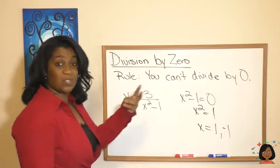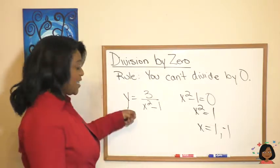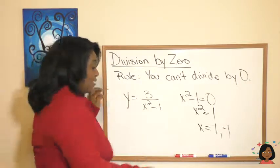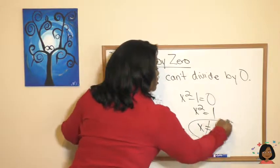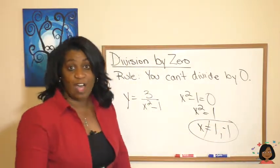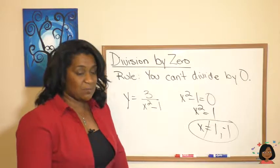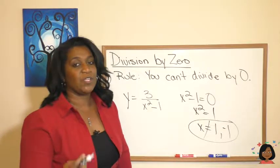So here, this one has actually two numbers that x cannot be. X cannot be one, and x cannot be negative one. This is just something to always watch out for as you're solving your equations. If you've got something on the bottom that'll give you a zero, you've got to make sure you tell us it can't be in that answer.